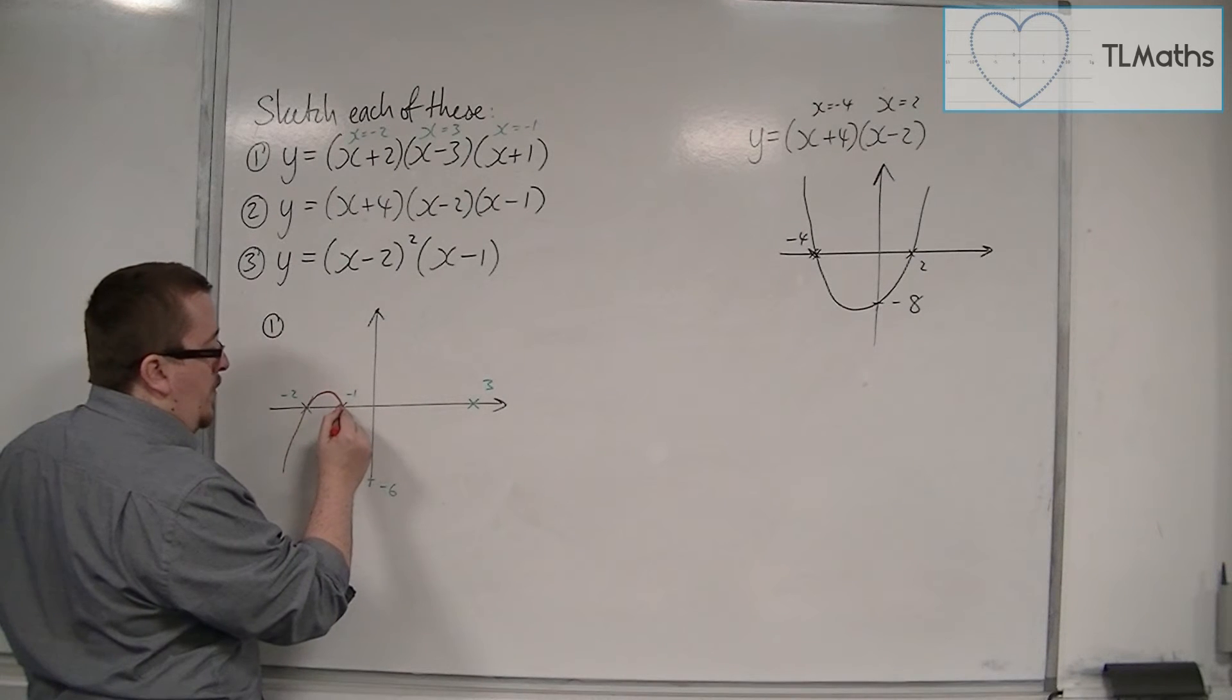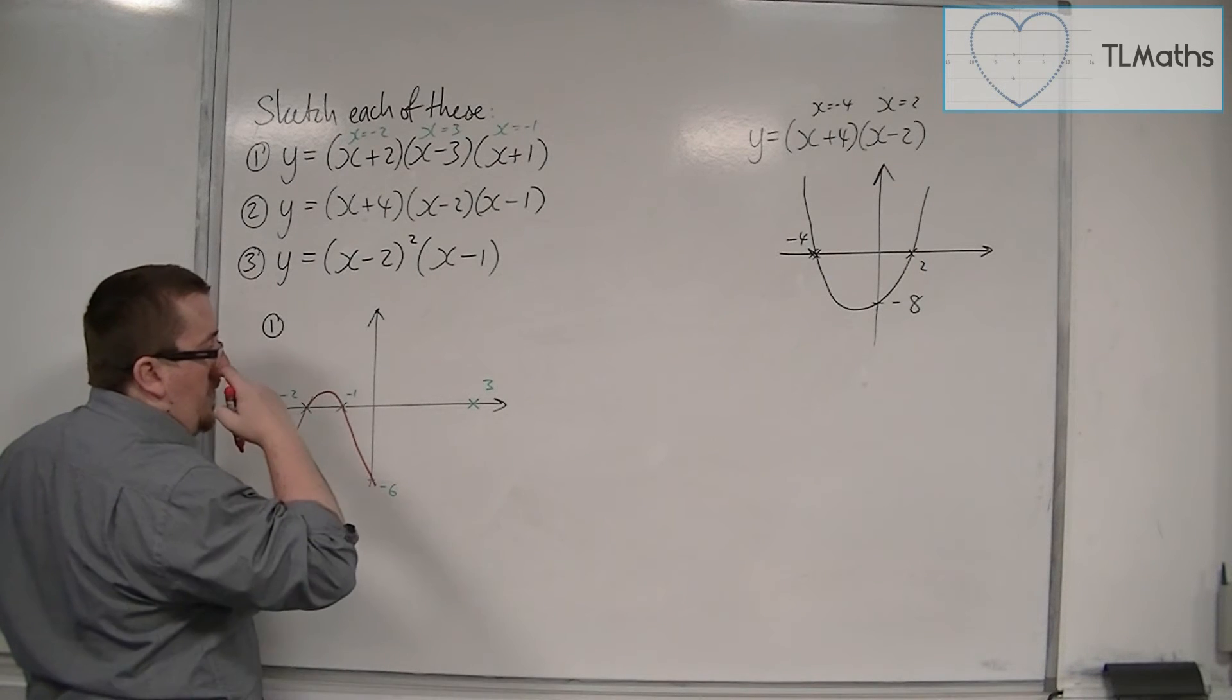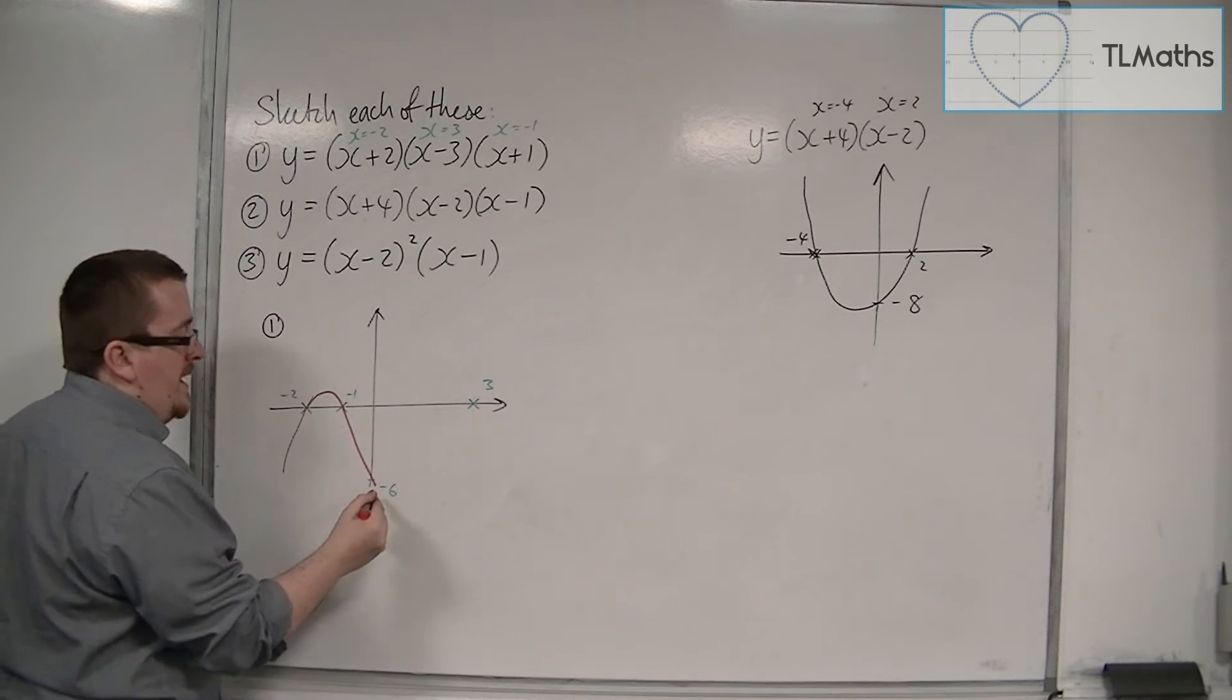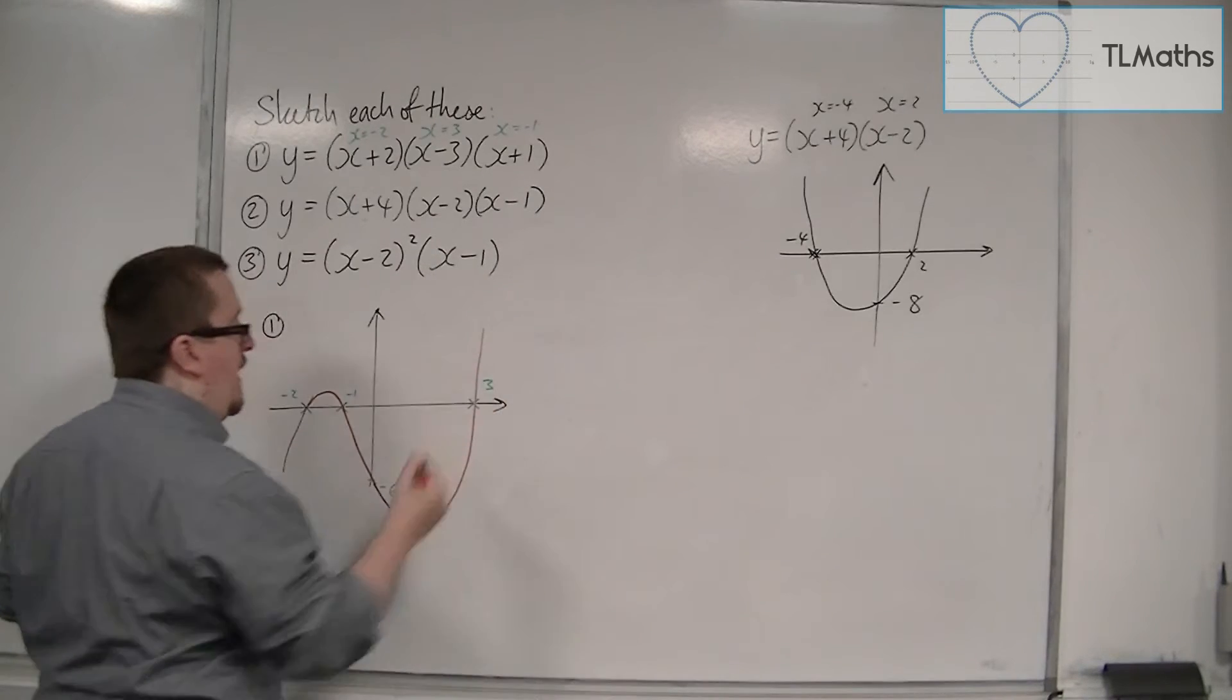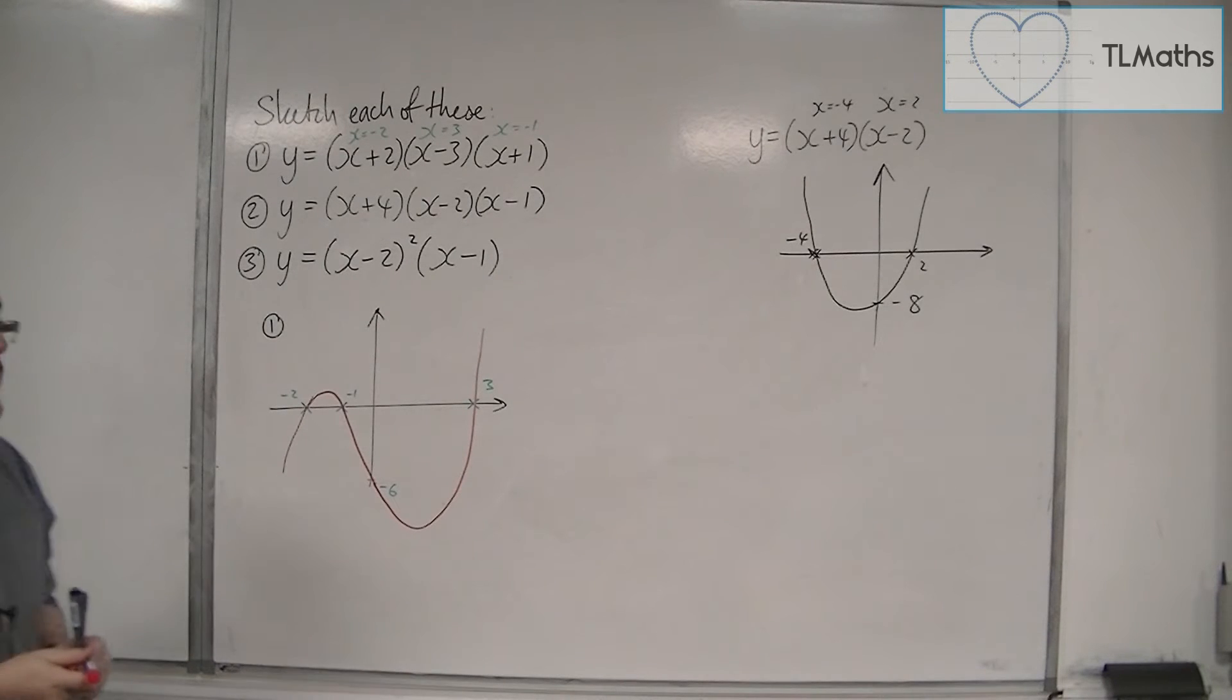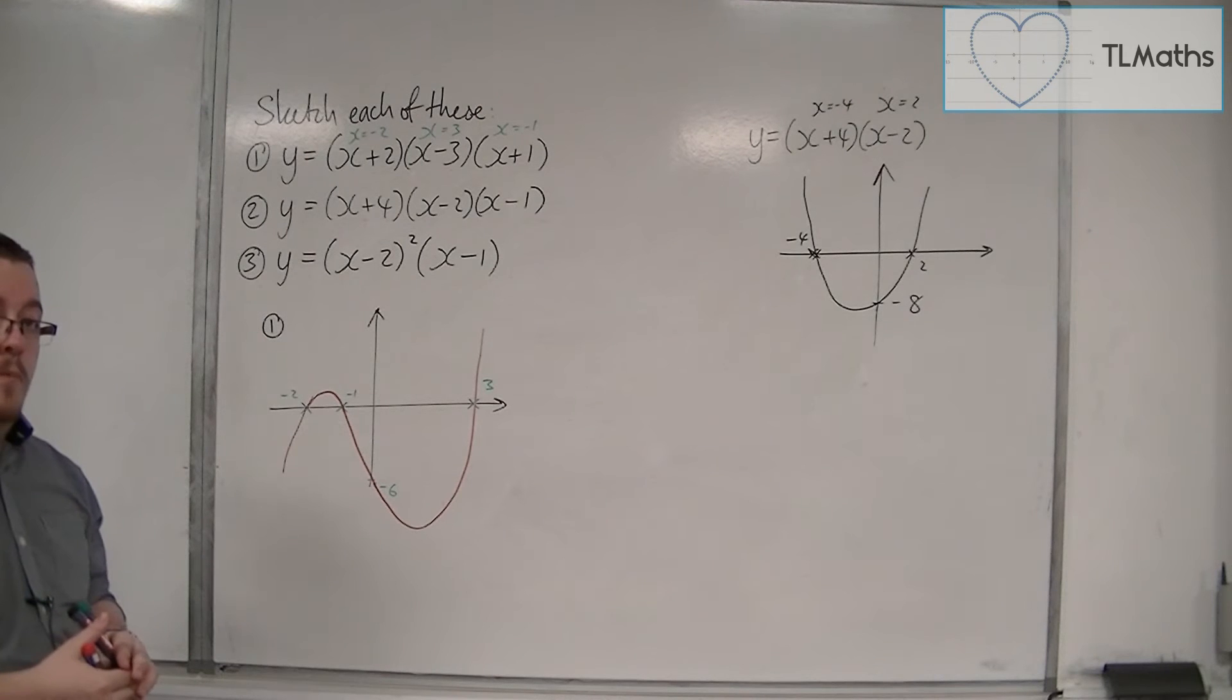It must then go all the way down and cross through at minus 6 on the y-axis. And then in order to cross at 3, it has to reverse direction and come back and go through 3 on the x-axis. And that is a sketch of the first one.